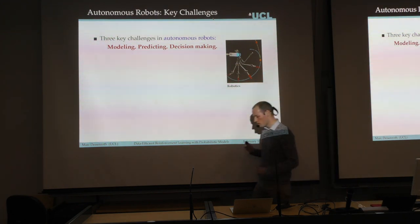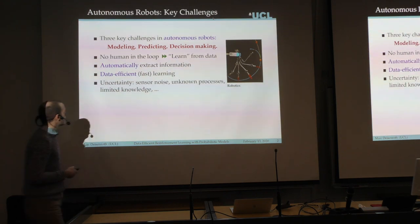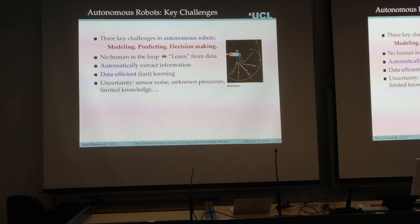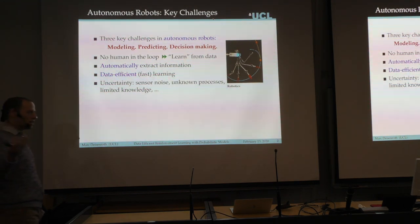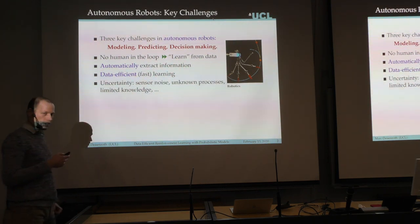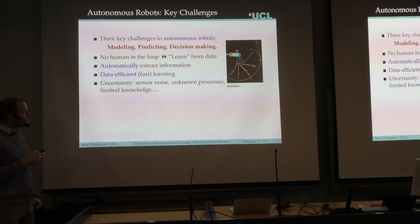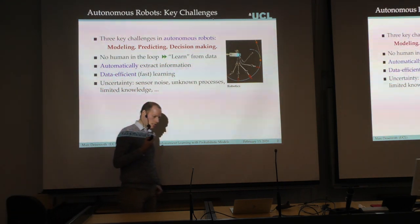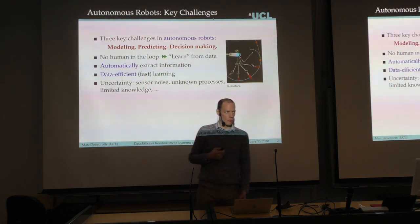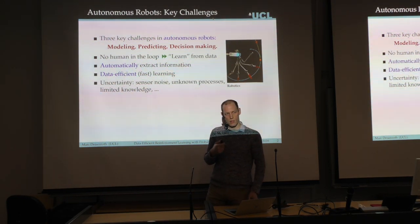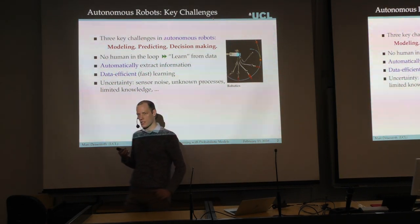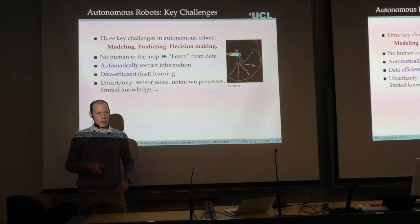There are also some challenges that come with this. Ideally for autonomous systems, we want to take humans out of the loop to make them self-learners — the robot needs to learn everything from data, and that requires it to automatically extract information from the data. In the context of robotics, one practical challenge is that we need to learn data-efficiently — we need to learn from relatively small data sets.